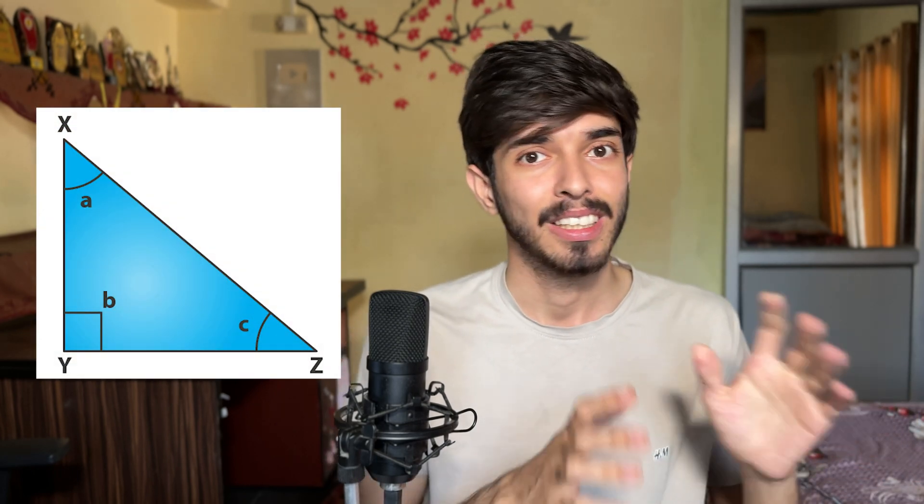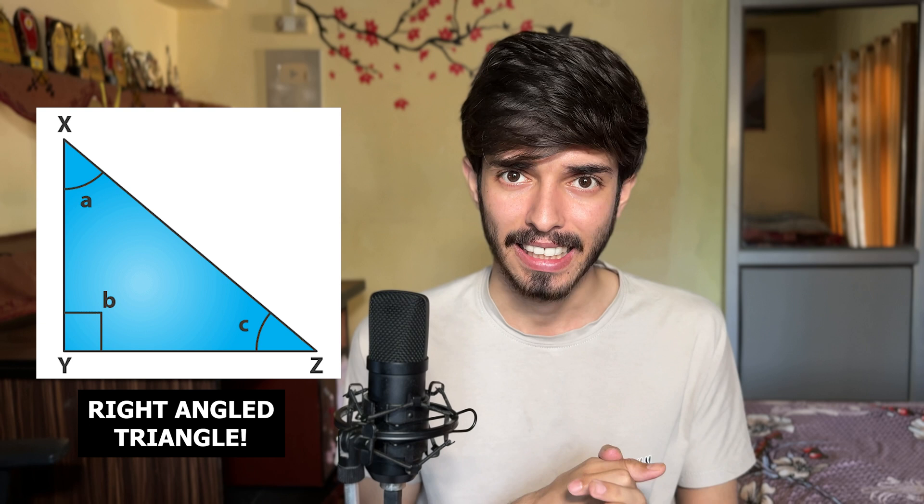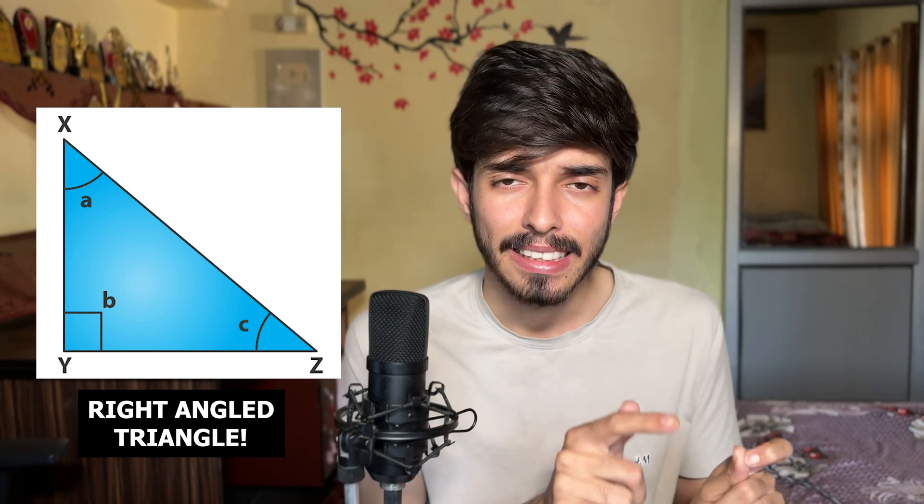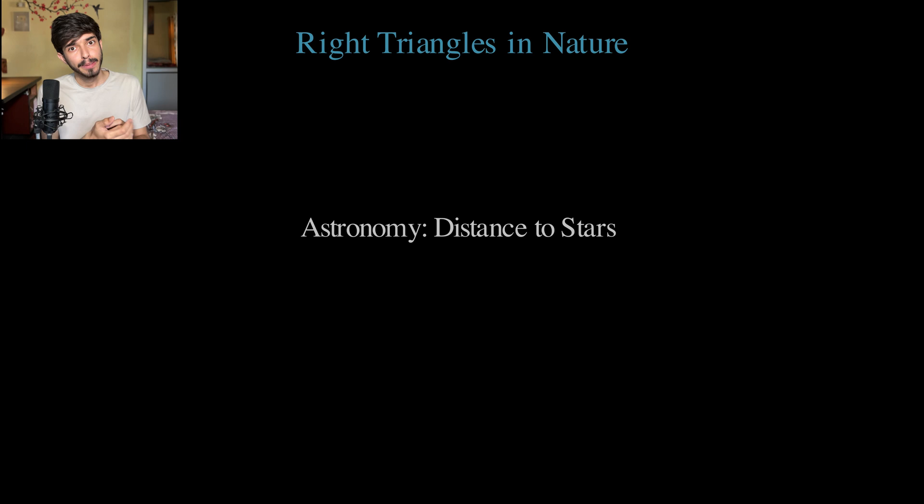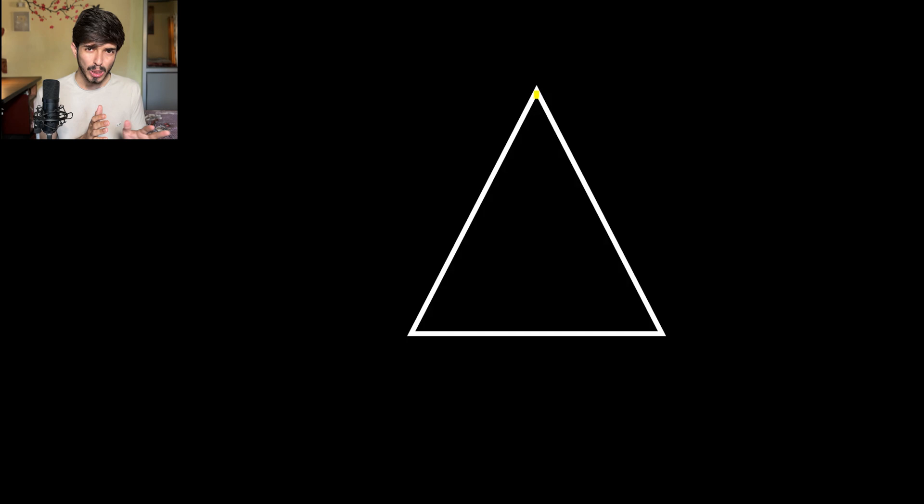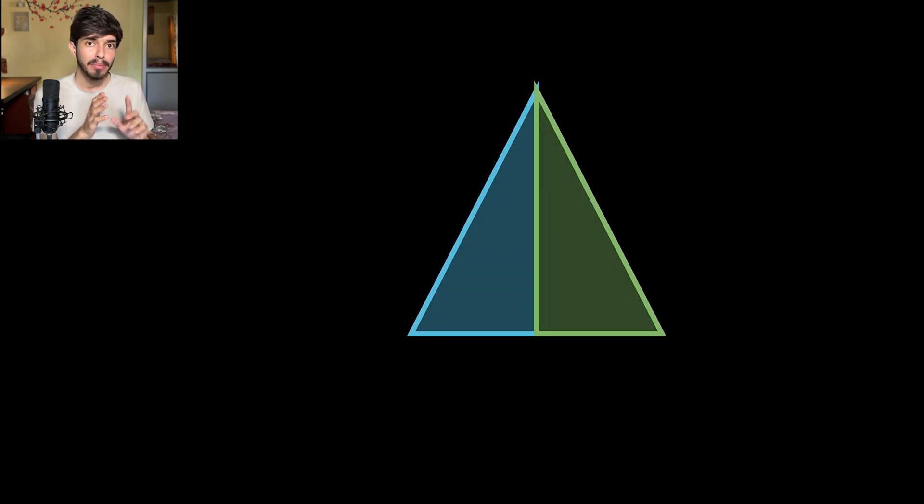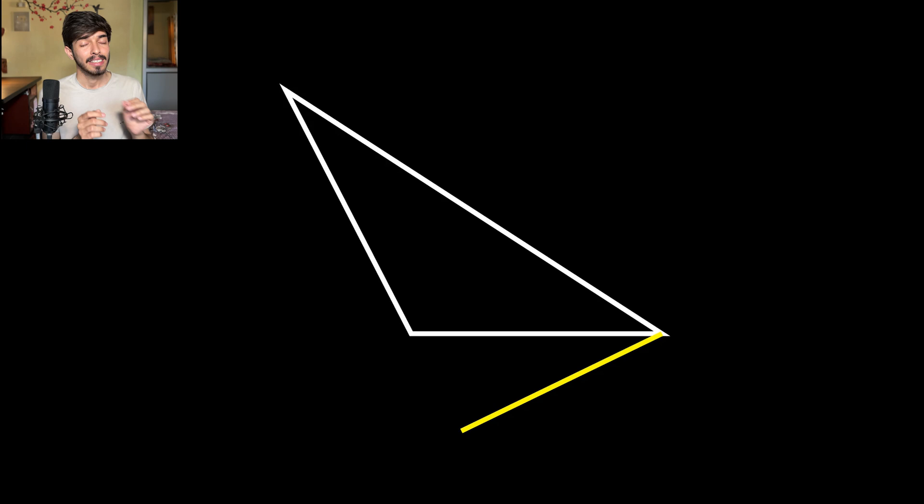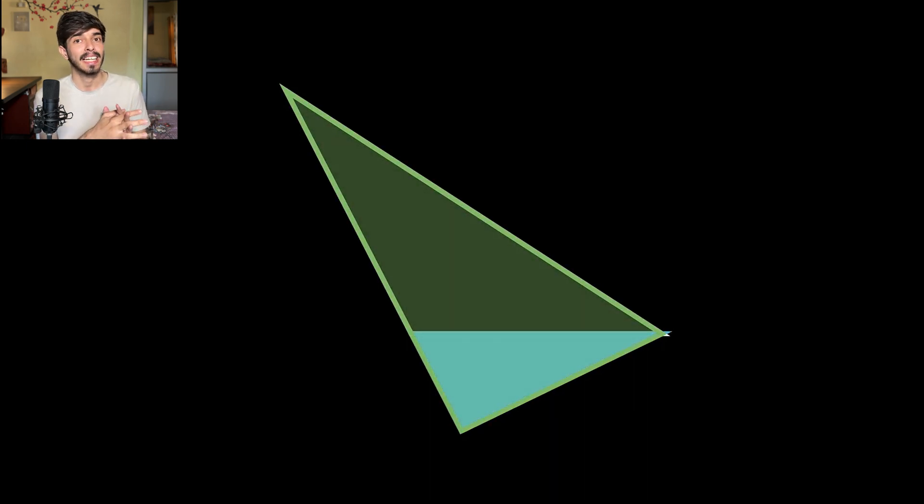In trigonometry, specially in grade 10, we mainly focus on a special kind of triangle known as the right angle triangle, whose one angle is fixed to 90 degrees. Why? It is because these kind of triangles mainly pop up in nature and are very useful. And also, any triangle can be decomposed into two right angle triangles. That is why we study right angle triangles the most.